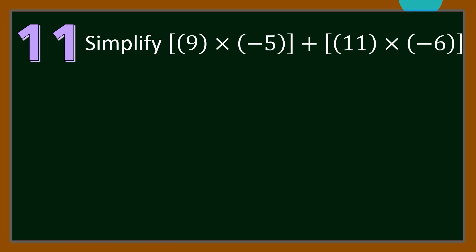Let us begin with question number 11. Let us simplify 9 times negative 5 plus 11 times negative 6. For our solution, we will use the order of operations.